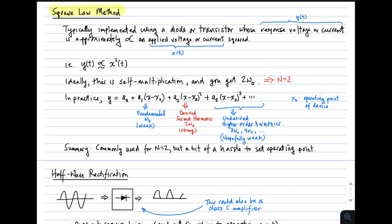First, the square law method. The square law method is typically implemented using a diode or a transistor whose response voltage or current, I'm going to call that y, is approximately proportional to the applied voltage or current, squared. So x of t, the applied voltage or current, results in a response of y of t, which is approximately squared. So if everything goes according to plans, this is self-multiplication. And as a result, you get a signal at twice the original frequency, as mentioned earlier.